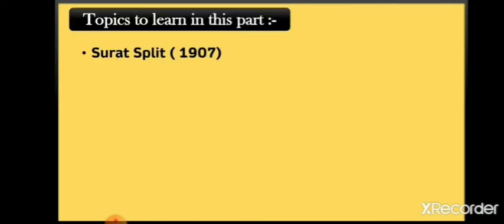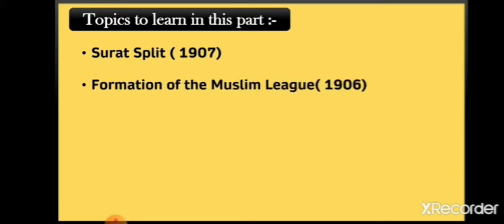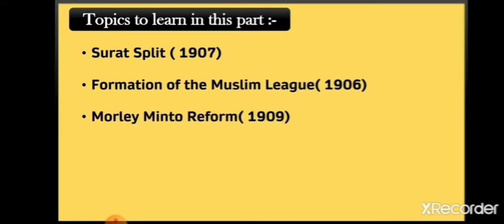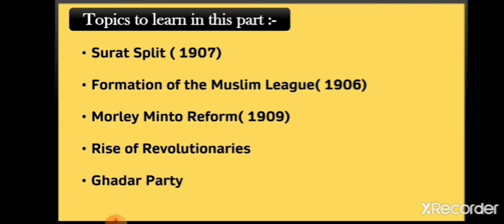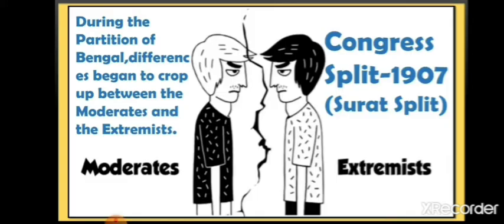Now let us see what we are going to learn in this part. We will learn about the Surat Split, also known as the Congress Split in 1907, the formation of the Muslim League in 1906, the Morley-Minto Reform, the rise of revolutionaries, and the Gadar Party.